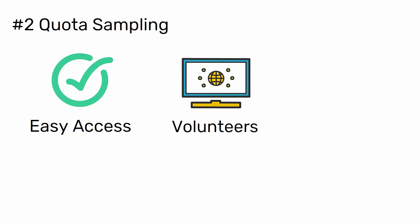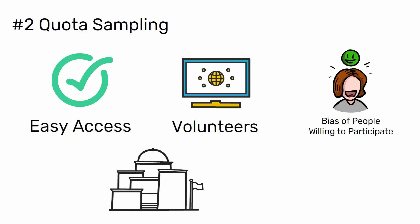Voluntary response samples are always at least somewhat biased, as some people will inherently be more likely to volunteer than others.